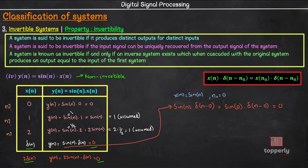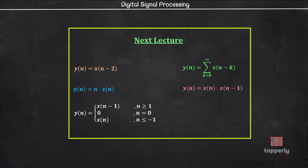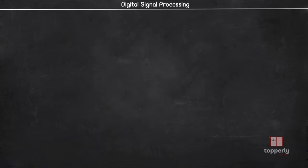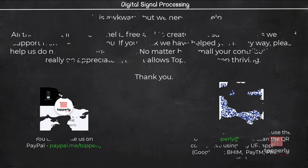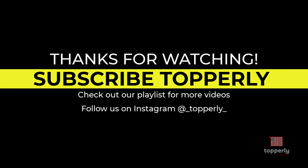We will stop our lecture here due to time limitations. One takeaway from this lecture is that, in general, there is no systematic way to check the invertibility of a system — you simply have to analyze the system. In the next video, we will see the invertibility of more systems. I hope all the concepts taught in this video are clear. If you have any doubts, feel free to ask them in the comments — either me or some other viewer will surely help you out. If you found this lecture useful, please like the video and support us by subscribing to the channel. Thank you for watching and have a great day.